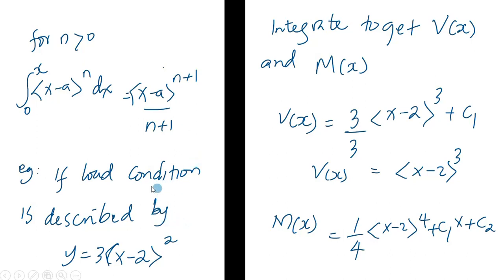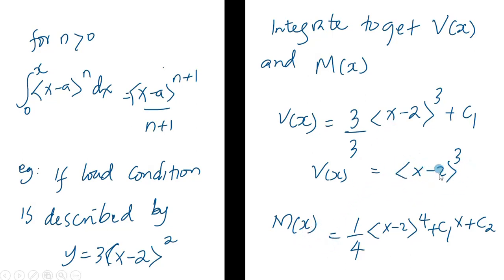For example, if the load condition is described by w(x) equals 3 times (x minus 2) squared, then integrating gives V(x) equals 3 times (x minus 2) to the power 3, divided by 3, plus C₁, which simplifies to (x minus 2) cubed plus C₁. Integrating again gives M(x) equals (x minus 2) to the power 4 divided by 4, plus C₁ times x, plus C₂.